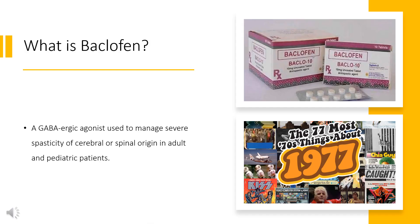What is Baclofen? Baclofen is a GABAergic agonist used to manage severe spasticity of cerebral or spinal origin in adult and pediatric patients. Like other gamma-aminobutyric acid (GABA) agonists, Baclofen is used as a skeletal muscle relaxant. Now, let's look back at the development of the history of medicine.